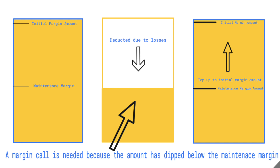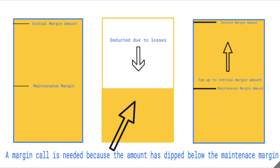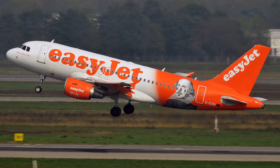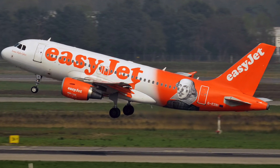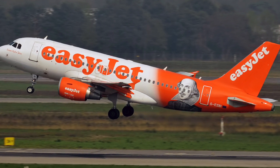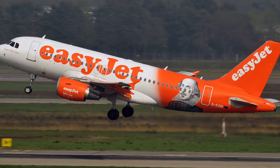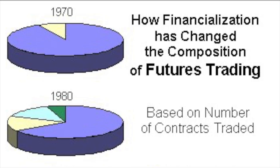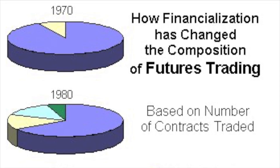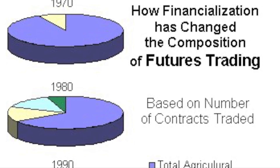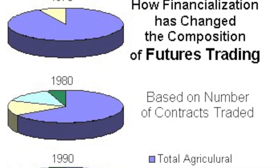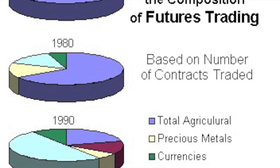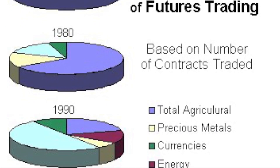Some corporations may enter into a physical delivery contract to hedge the price of a commodity they need for production — this may include an airline hedging the price of oil, for example. Most futures contracts, however, are from traders who speculate on the trade, and these contracts are closed out and cash settled, so you don't actually receive the physical commodity such as oil.